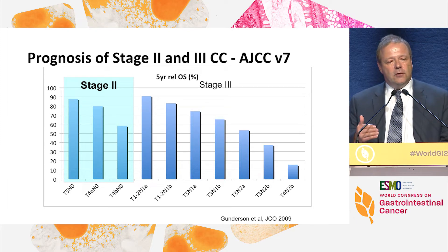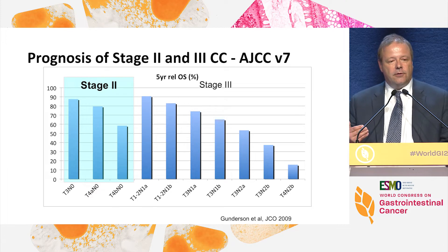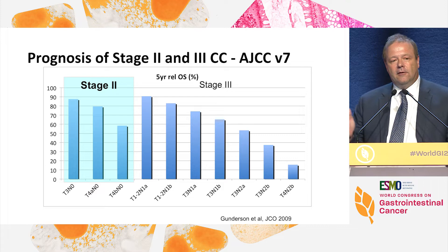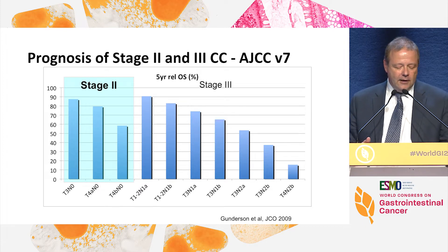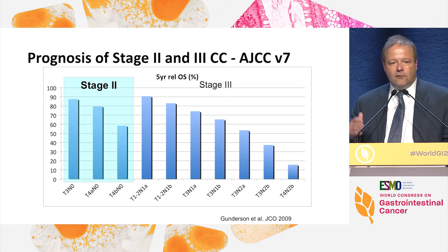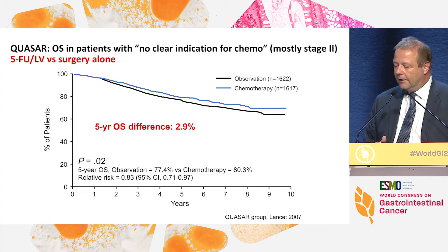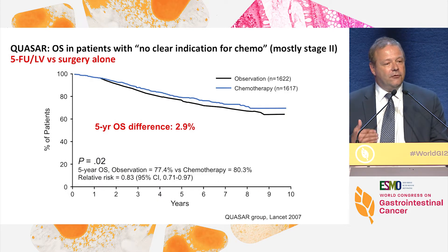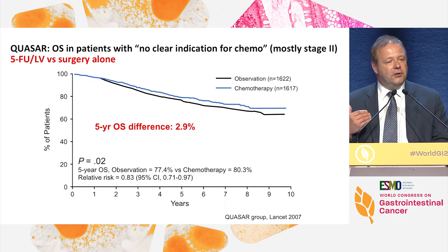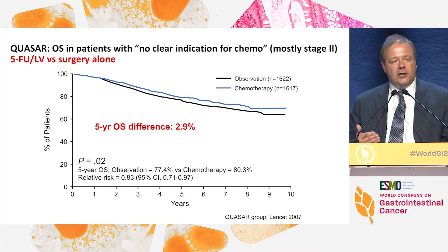That is a prognostic implication, and of course we like to translate this into treatment recommendations. The questions are: who should be treated in stage two disease with adjuvant therapy and with what kind? And who should not be treated in stage three disease, or do all stage three patients need oxaliplatin-based therapy? This is something Thierry will cover later.